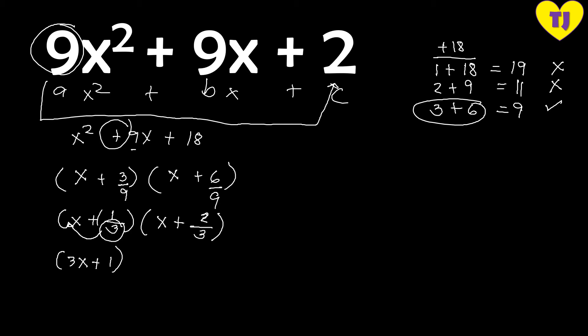Since x plus 2/3 is also a fraction, we slide its denominator back to the first term as well, giving us 3x plus 2. So our final factors are (3x plus 1) and (3x plus 2).